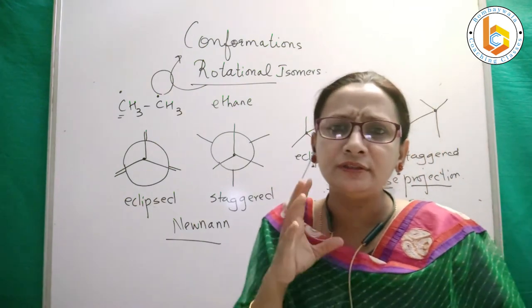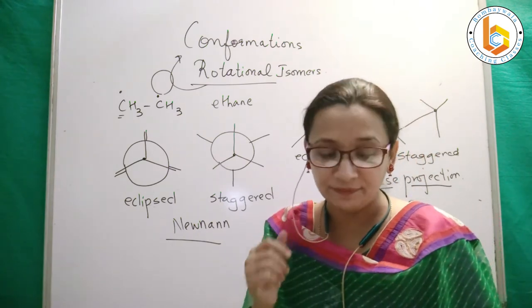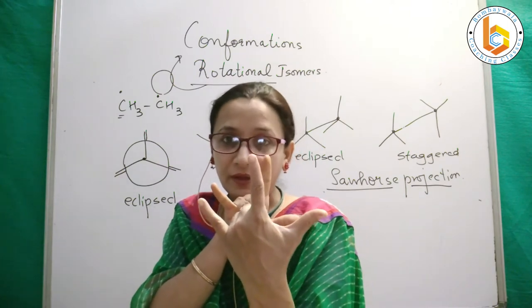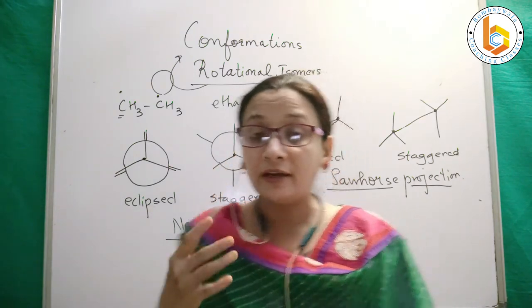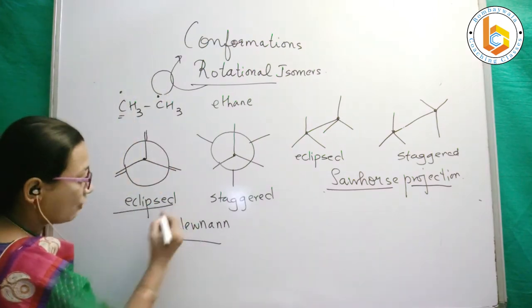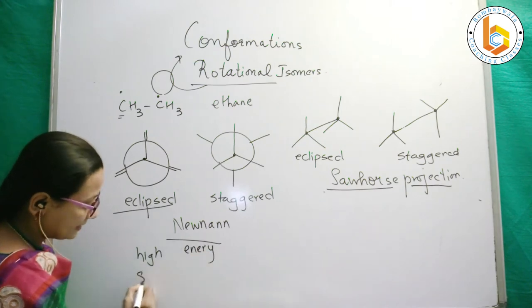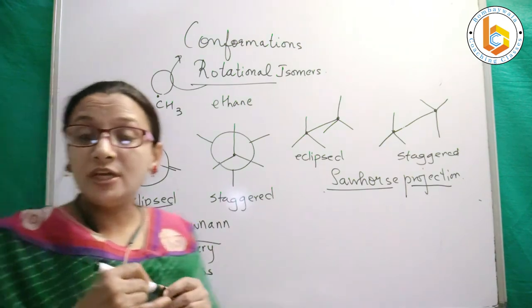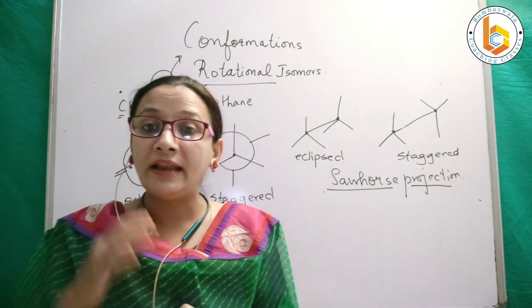Now the most important thing after representation is the energy. You should understand and remember this: when the forms are eclipsed, they are comparatively higher energy and less stable. When the form is eclipsed, the energy is high and stability is less.